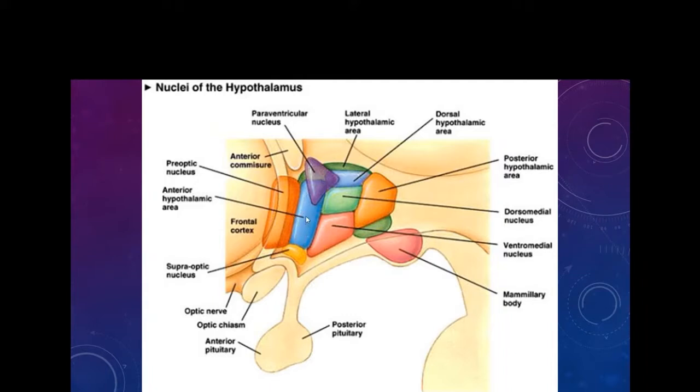For instance, this one here, the anterior hypothalamus, is the control center for the parasympathetic nervous system. And this one back here, the posterior hypothalamic zone, this one is the center of control of the parasympathetic.